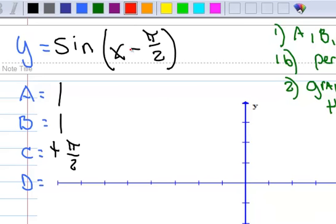Recall that the standard form of equation has a minus here, so this is minus a positive pi over 2. And then D is 0.